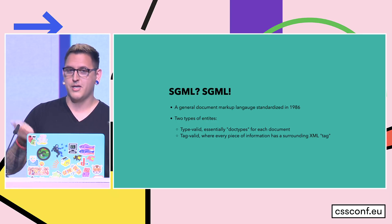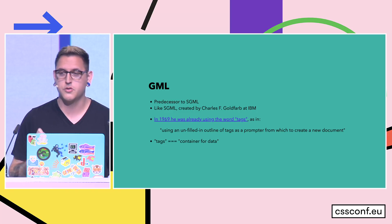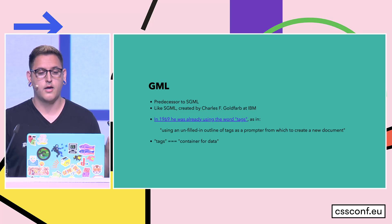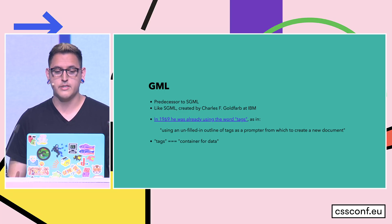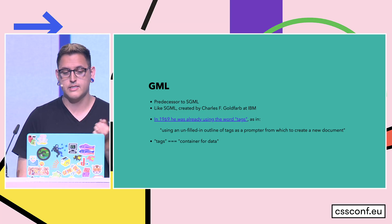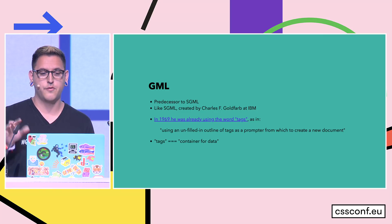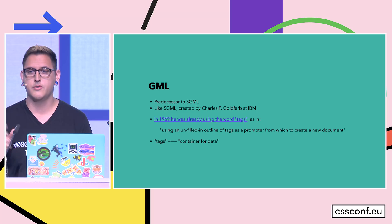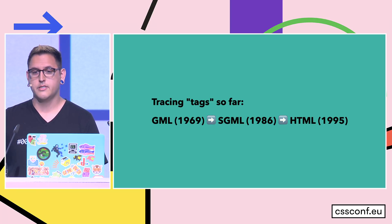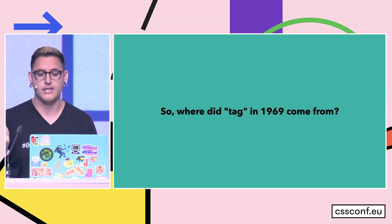This doesn't really answer our question because there is something that even precedes SGML, which is GML. Both of them were created by Charles Goldfarb at IBM. He talks about tags as early as 1969, in a sentence fragment where he talks about 'using an unfilled-in outline of tags as a prompter from which to create a new document.' This is where we first see the word 'tag' resemble something we would recognize in HTML — as a container for data. If we were to stop here, this is what the chain would look like, but we can go further down the rabbit hole and ask where the usage of 'tag' in 1969 came from.